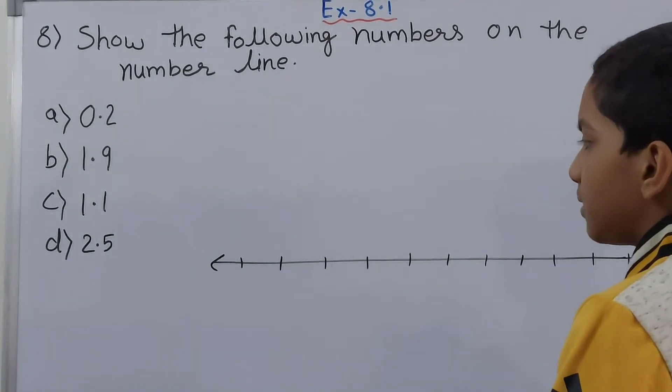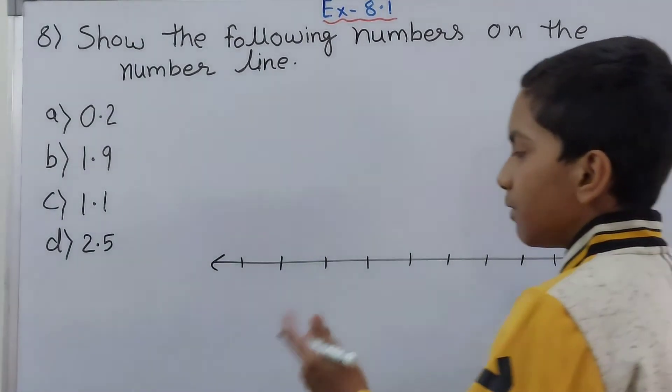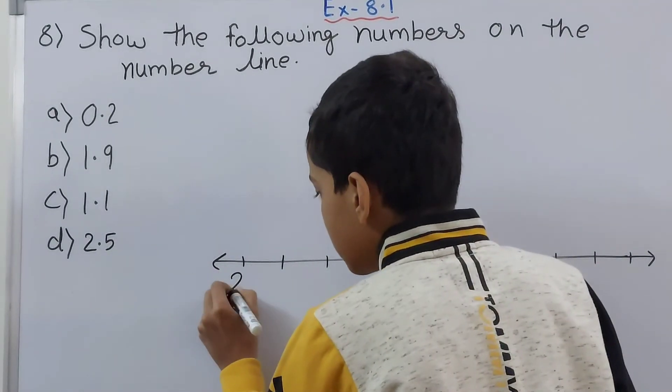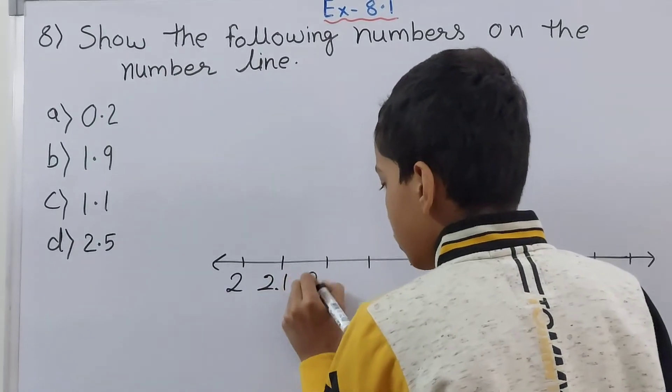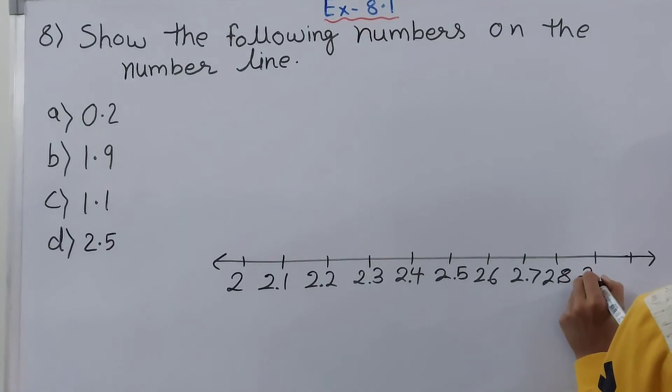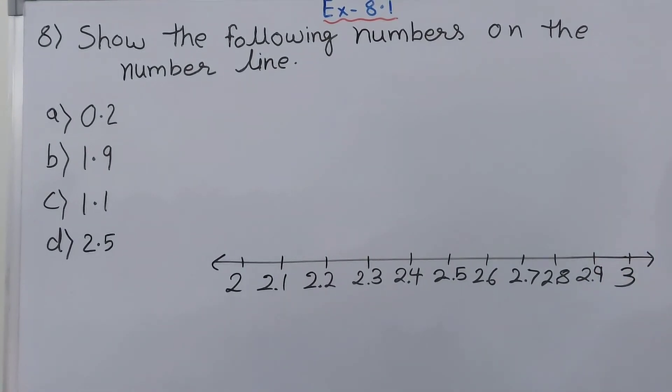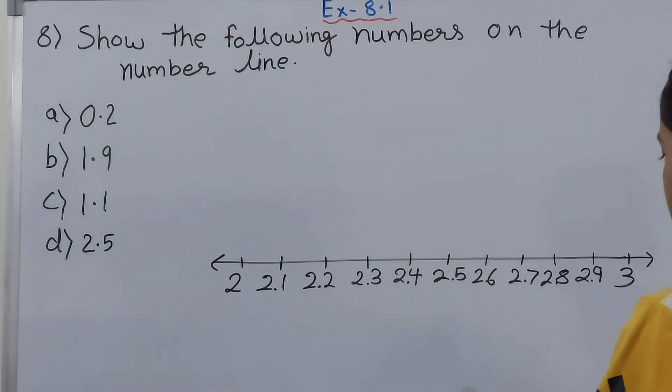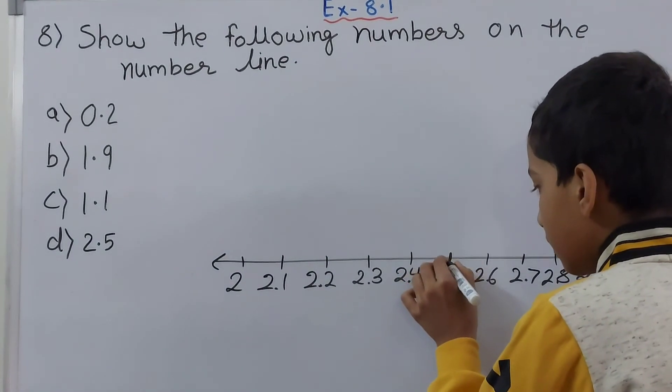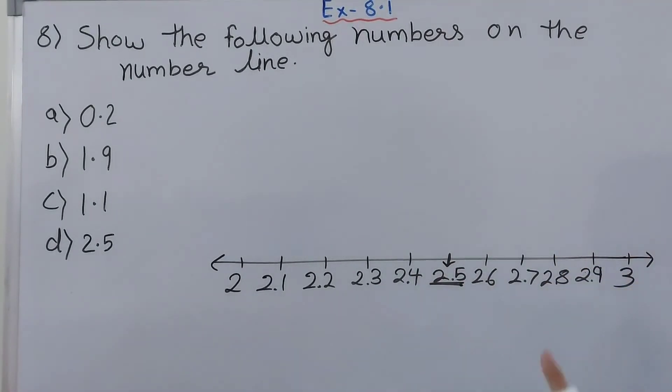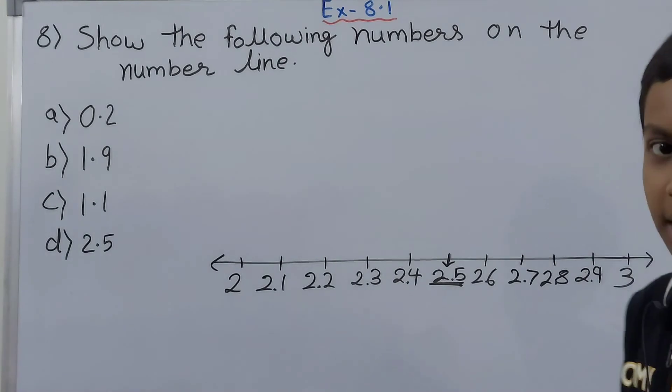Now let's start drawing the number line. We will start filling numbers from 2. Let's start: this goes to 2.1, 2.2, 2.8, 2.9, and in the last we will write 3 which is the whole number. This is how we fill the number line. Now let's locate 2.5 here. As now you can see, 2.5 is over here. This is the answer of the D part.